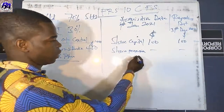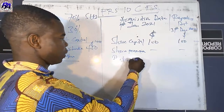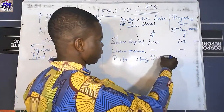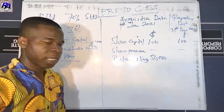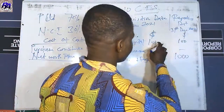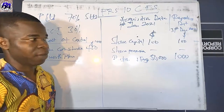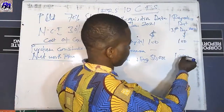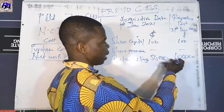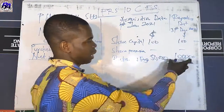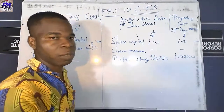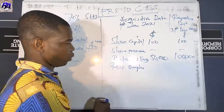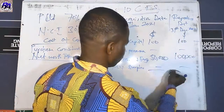Now we calculate group retained earnings. First, bring the retained earnings of the parent as per the balance sheet: 650. Then add the post-acquisition movement in profit from the subsidiary: the reporting date retained earnings of 100 minus the acquisition date retained earnings of 50 = 50, multiplied by 70% = 35. Group retained earnings = 650 + 35 = 685.